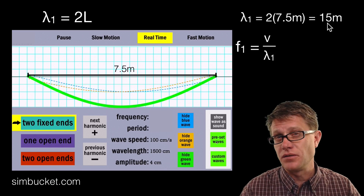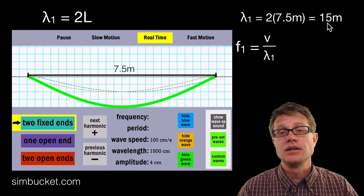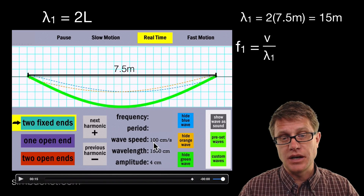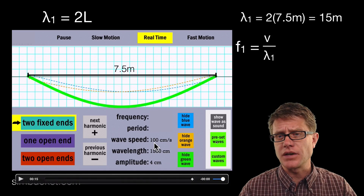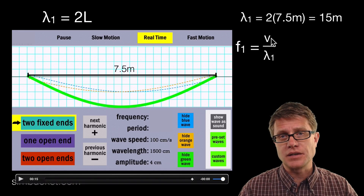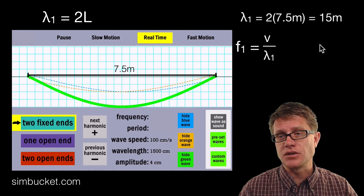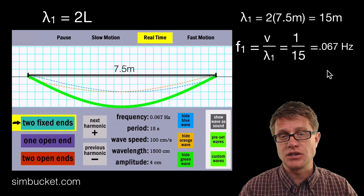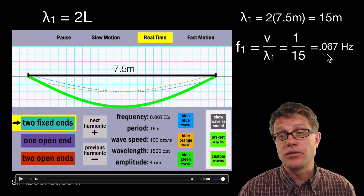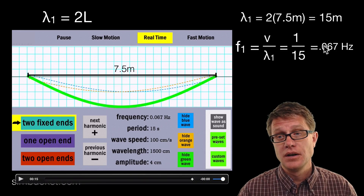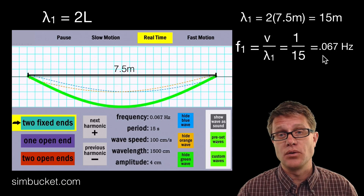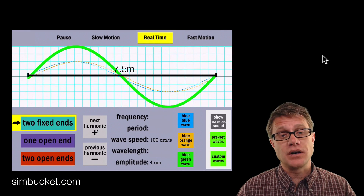Now that we have the wavelength as 15 meters, let's find the frequency. Frequency equals velocity divided by wavelength. The simulation gives the speed as 100 centimeters per second, which is 1 meter per second. So frequency equals 1 divided by 15 meters, giving 0.067 hertz — and the simulation confirms that. To find the period, remember it's the reciprocal of frequency: 1 divided by the frequency gives you the period.